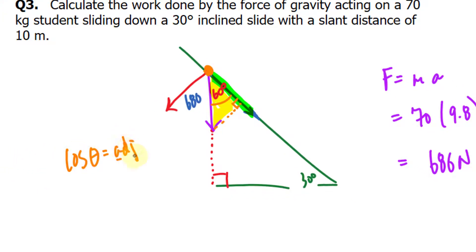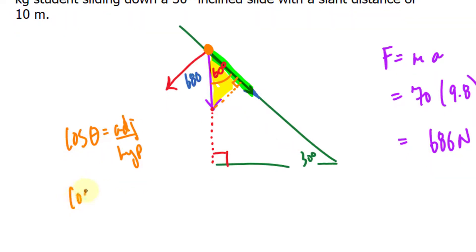Adjacent and hypotenuse is related through cosine, where you have adjacent over hypotenuse. The angle we're using is 60, so cosine 60 equals the adjacent—we don't know what that is, that's what we're looking for—but we do know the hypotenuse. It's 686.